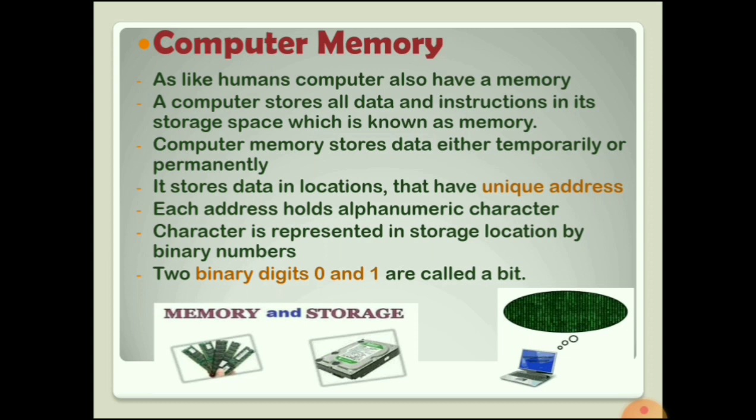The computer memory stores data in different locations that have a unique address. As you see on the screen, the computer stores data in specific locations and each has a unique address. Each address holds one alphanumeric character. Alphanumeric character means either an alphabet, number, or symbol that is understandable and processable by a computer.